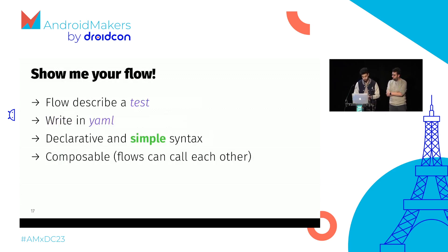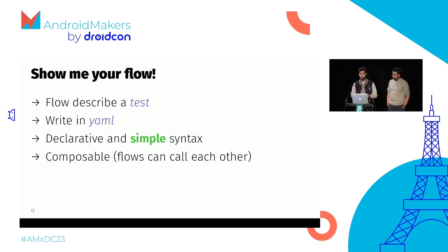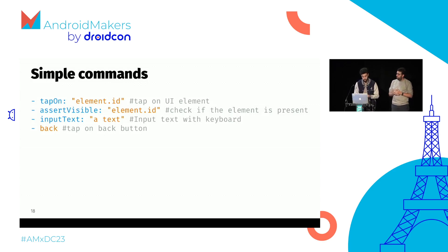In Maestro, a test is called a flow. Basically, a flow is just a list of commands that run on your device in order to create a test. Those flows are written in YAML, which is a really simple and declarative syntax. A really useful thing is that flows are composable — a test can call another test in order to test bigger features. The commands are really easy to read and write. You can see classic commands like tap on an element, assert that an element is visible, write some text into an input, and also native commands such as the back or home button.